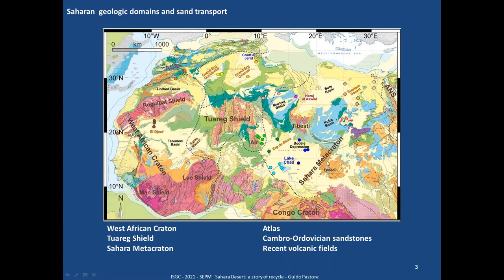There are some Mesozoic basins in Kufra and Murzuk. In the middle we have the Tuareg Shield with a peculiar north-south shear zone, considered to have formed during an escape tectonic event, possibly due to squeezing by the two flanking cratons. It has some stacking of very different terranes.